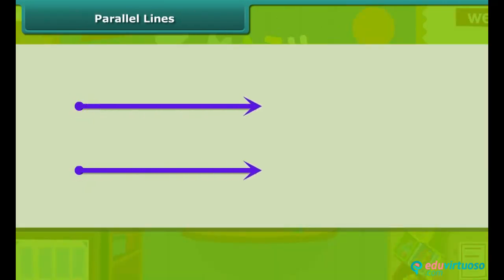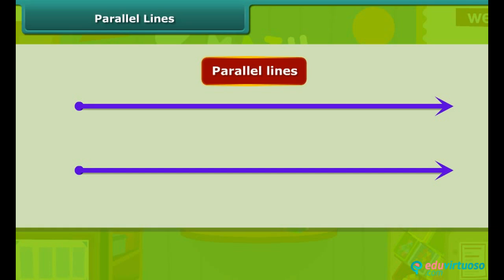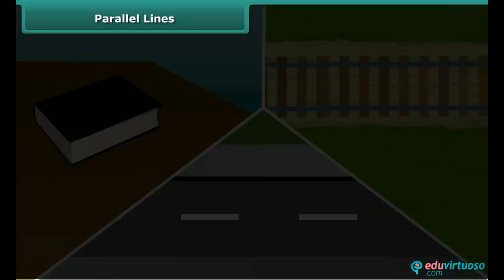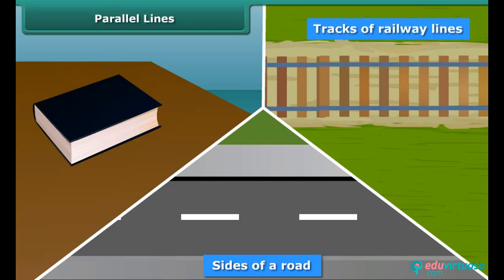Another set of lines are those which do not intersect. Such lines, which do not meet at all, are called parallel lines. The distance between these lines remain constant. Here, two lines L and M do not intersect, so they are parallel lines. A few examples of parallel lines from daily life include sides of a road, tracks of railway lines, and edges of a book.